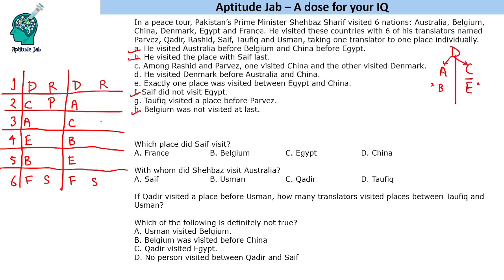In the first case, Taufic cannot visit before Pervez, so that case gets ruled out. So Taufic visits the place before Pervez — placing Taufic here. The order becomes Rashid, Taufic, Pervez. We have used all the available information. We are left with two more people — Qadir and Usman — who could be in any remaining order. We have found the order of countries and most translator assignments.